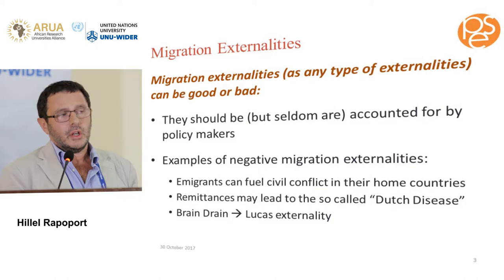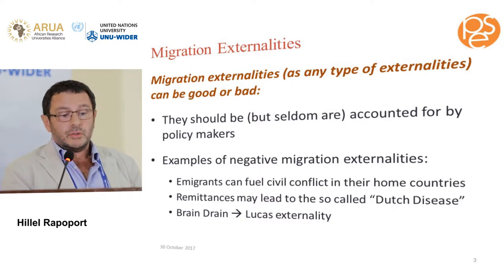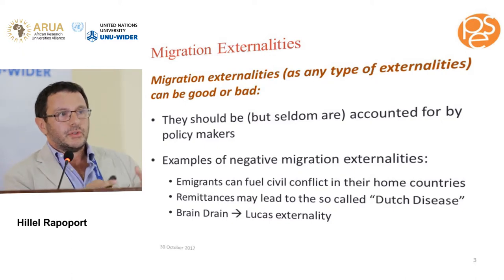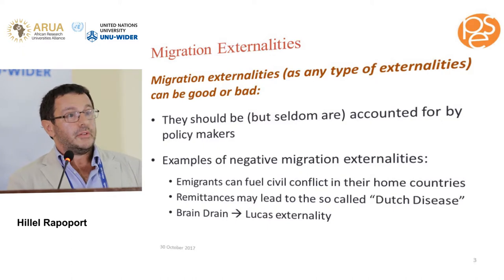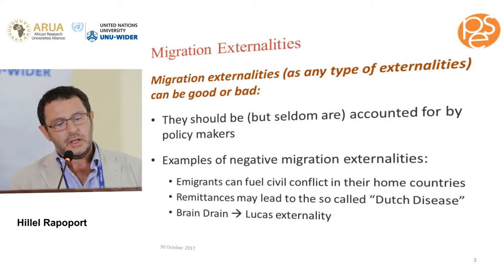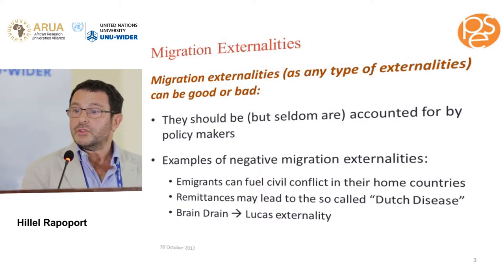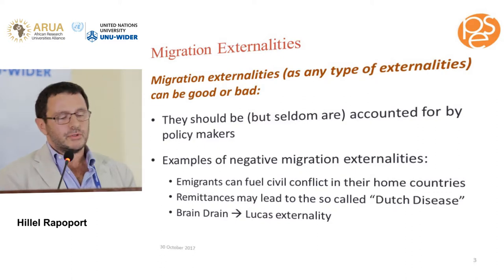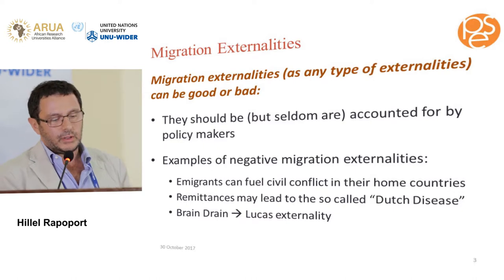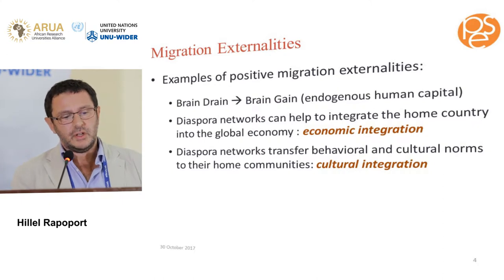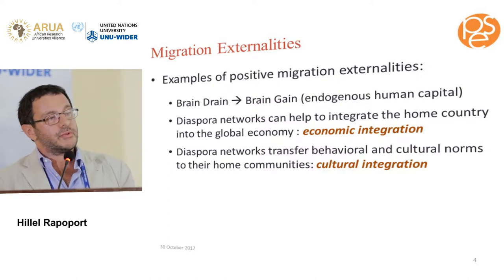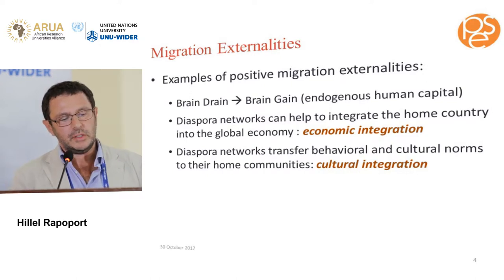Migration externalities can be good or bad. Examples of negative migration externalities include diasporas fueling civil conflict, the Dutch disease effect of remittances, and most famously the brain drain — where people leave and the stock of human capital in the home country is depleted. On the positive side, if you factor in the incentives to educate, the brain drain becomes a brain gain — a positive externality.